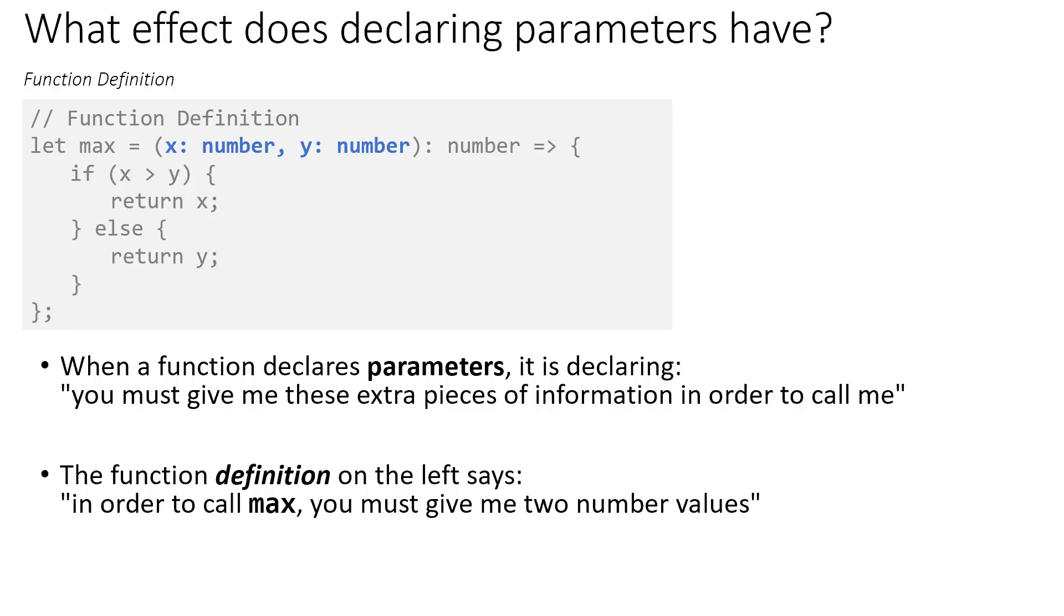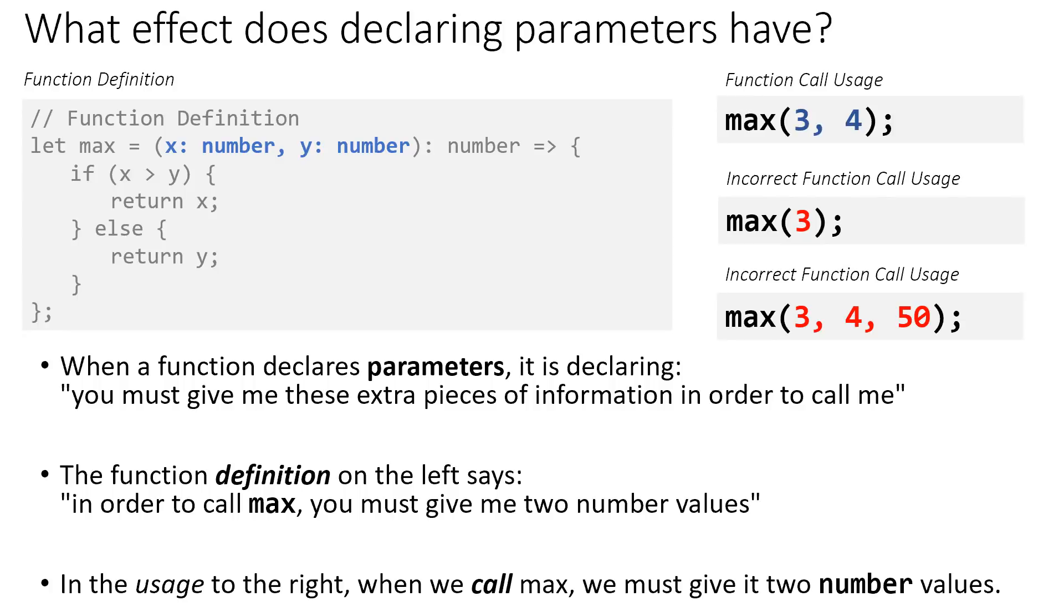In the function Max, you see that we must give it two numbers. And if we look at some examples on how we might call this function, Max 3 comma 4 would be a valid call of the Max function because we are giving the Max function two numbers. But two incorrect examples are Max 3 or Max 3 for 50.